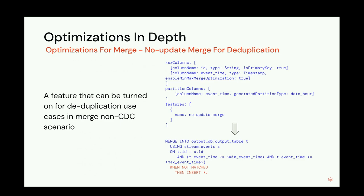Next is the no-update merge optimization, which reduces the amount of data written to the target table. We have many deduplication use cases for merge non-CDC scenarios: services emit events to Kafka with at-least-once delivery, but when ingesting into Delta Lake, users don't want duplicate records. With no-update merge enabled, we only do an insert if we don't find a match — instead of the usual delete, insert, and update three operations. We can further improve performance by combining this with the min-max range optimization to also reduce data loaded from S3.